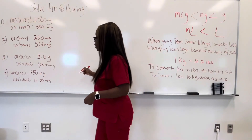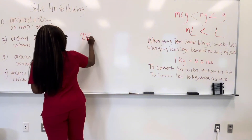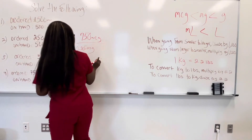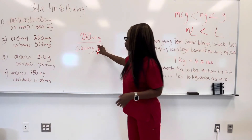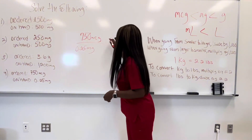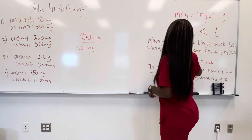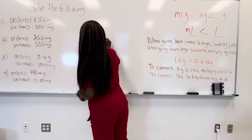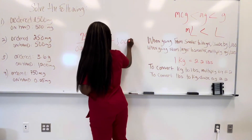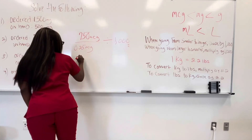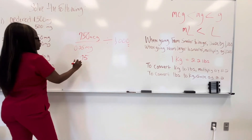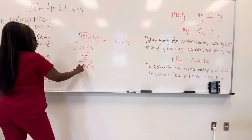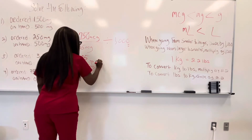The doctor is ordering 750 micrograms of a medication, and what we have is 0.25 milligrams. Again, two different measurements, so we have to convert. Micrograms are smaller than milligrams, so going from smaller to larger, we divide by 1,000: 750 divided by 1,000 gives us 0.75 milligrams. Now we have 0.75 over 0.25, and dividing 0.75 by 0.25 gives us 3 tablets.